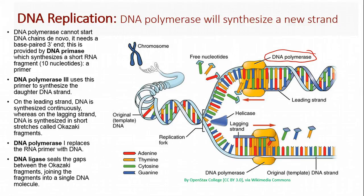De novo is a term that means out of nothing. It actually needs a free 3' hydroxyl end on a pentose sugar. So what happens is we have a protein called DNA primase. It gives us a short RNA fragment, about 10 nucleotides. And then our protein called DNA polymerase comes in and uses the primer to synthesize the daughter DNA strand.